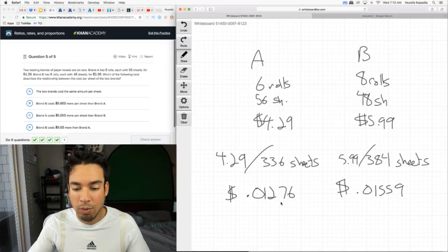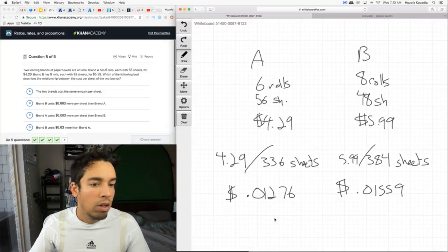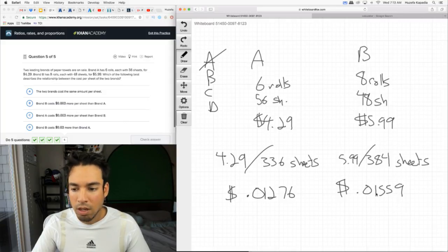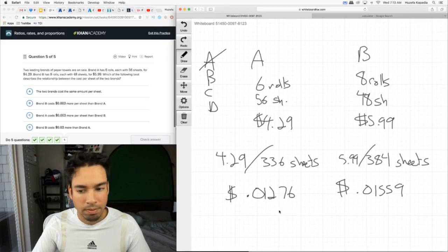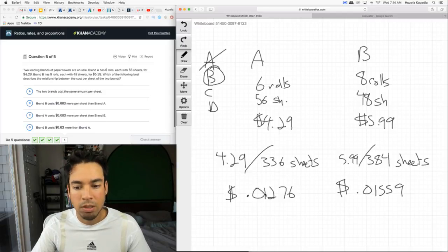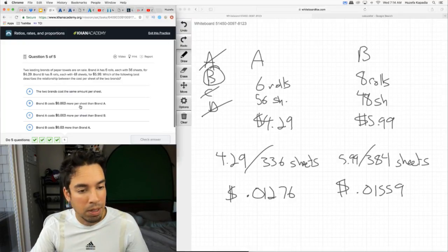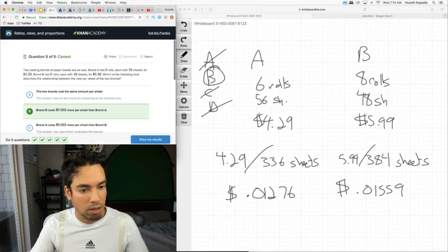Now we've got pretty accurate comparisons and we can see that this one is cheaper by like a thousandth of a dollar. Let's look at the options. The two brands cost the same per sheet? No, they don't cost the same. Brand B costs $0.003 more than A? Yes, that's actually right, it's approximately 0.003 more. Brand A costs more? No, brand A is cheaper. Brand B costs $0.03 more? No, because then that would be 0.01 versus 0.04, so this is out. It's definitely got to be B. Let's make sure, all right, sweet.